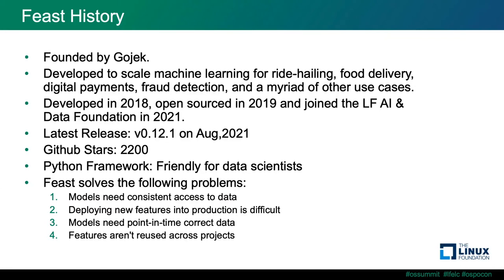Feast is able to solve several problems. First, models need consistent access to data. Machine learning systems built on traditional data infrastructure are often coupled to databases, object stores, streams, and files. Any change to the infrastructure can break a system. Feast decouples models from your infrastructure by providing a single data access layer that abstracts feature storage and feature retrieval.